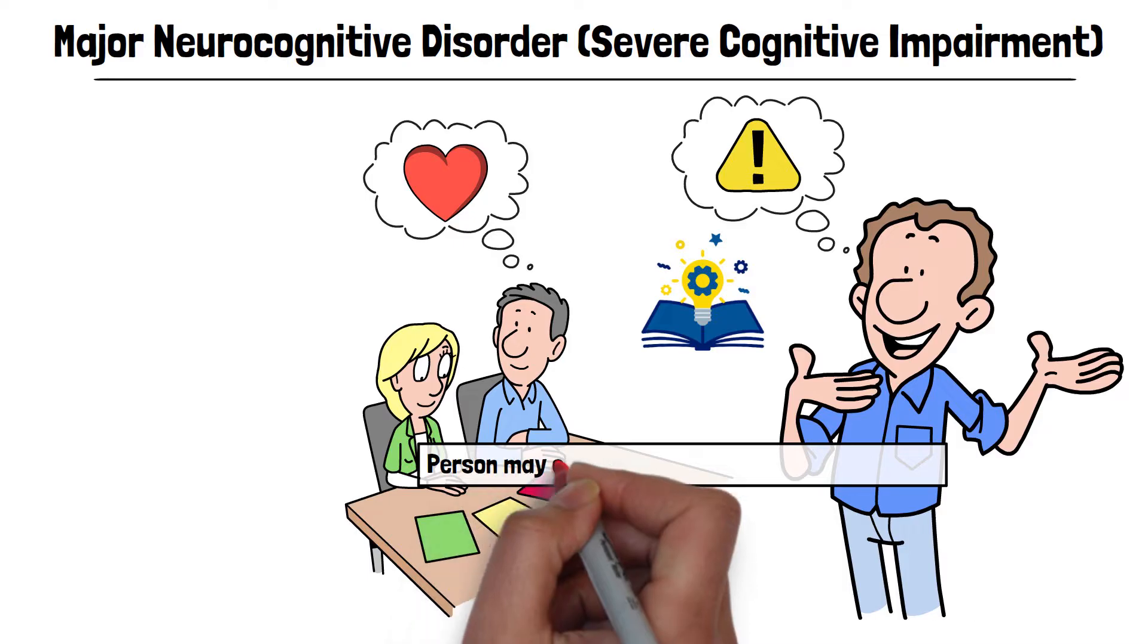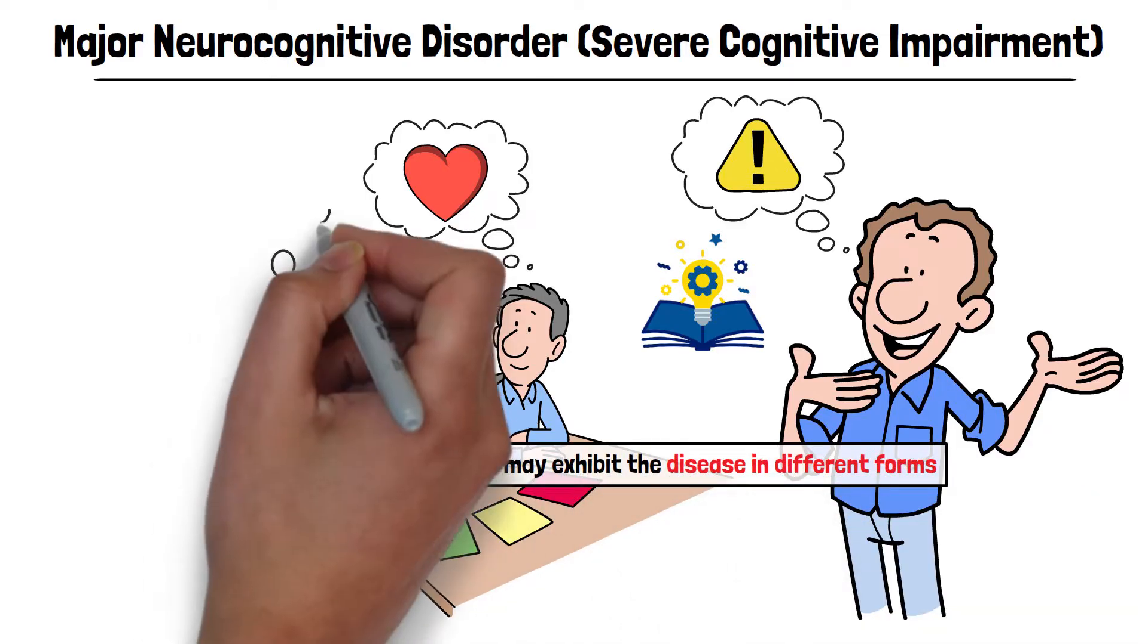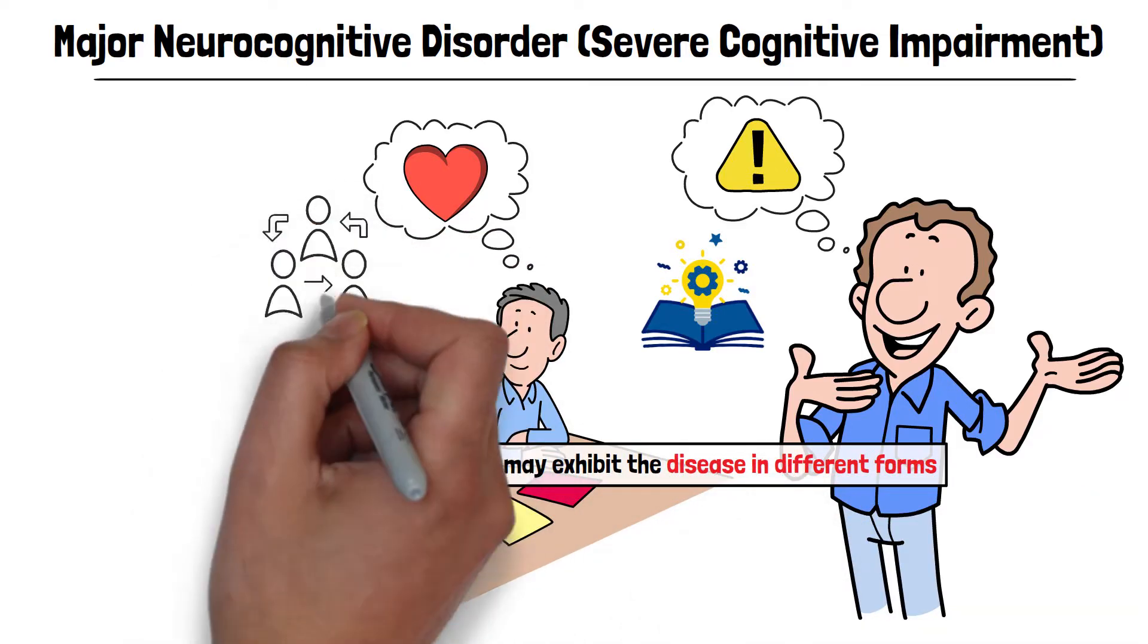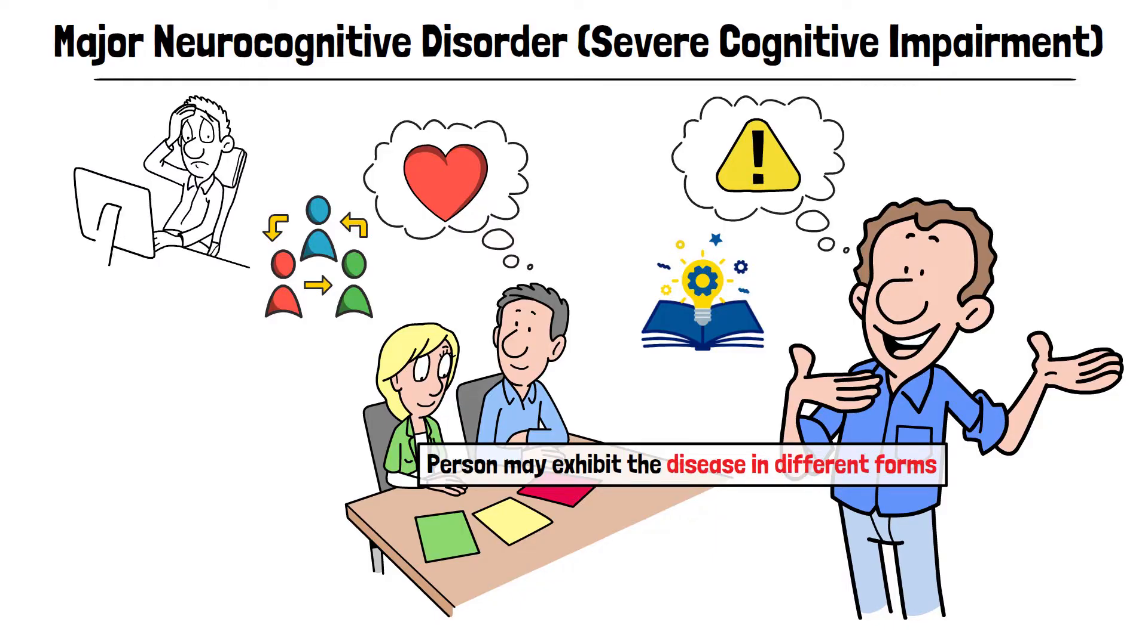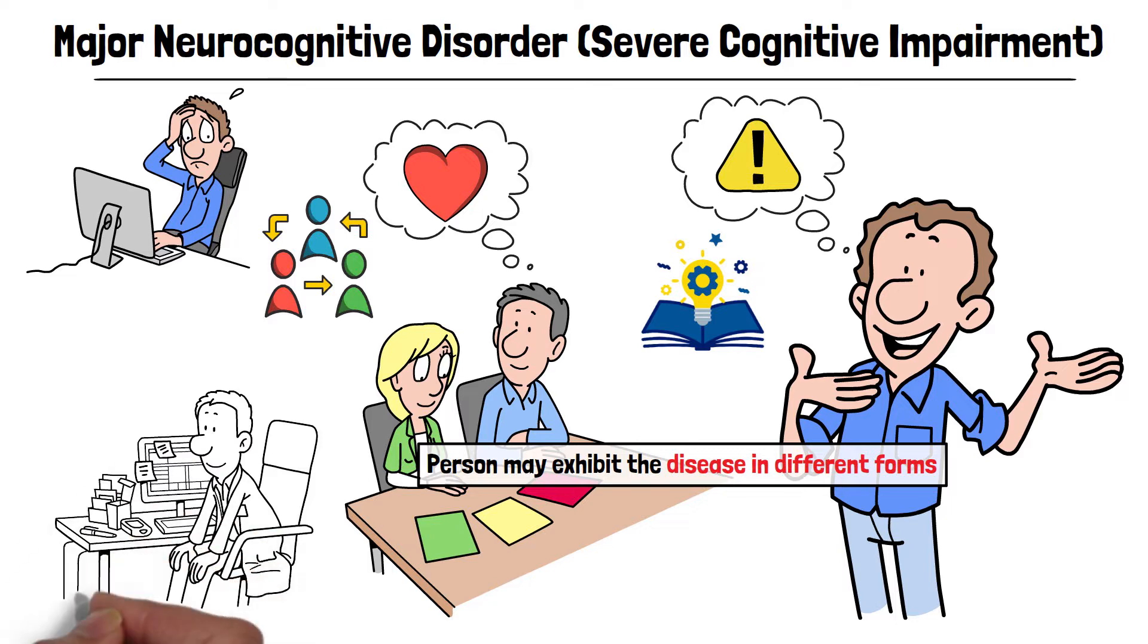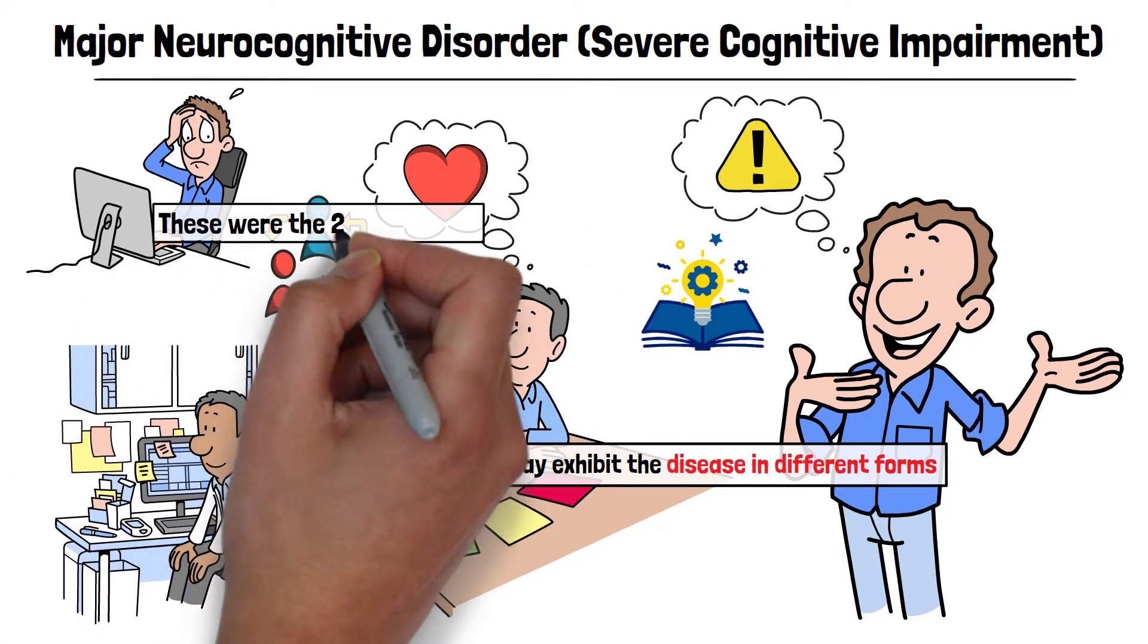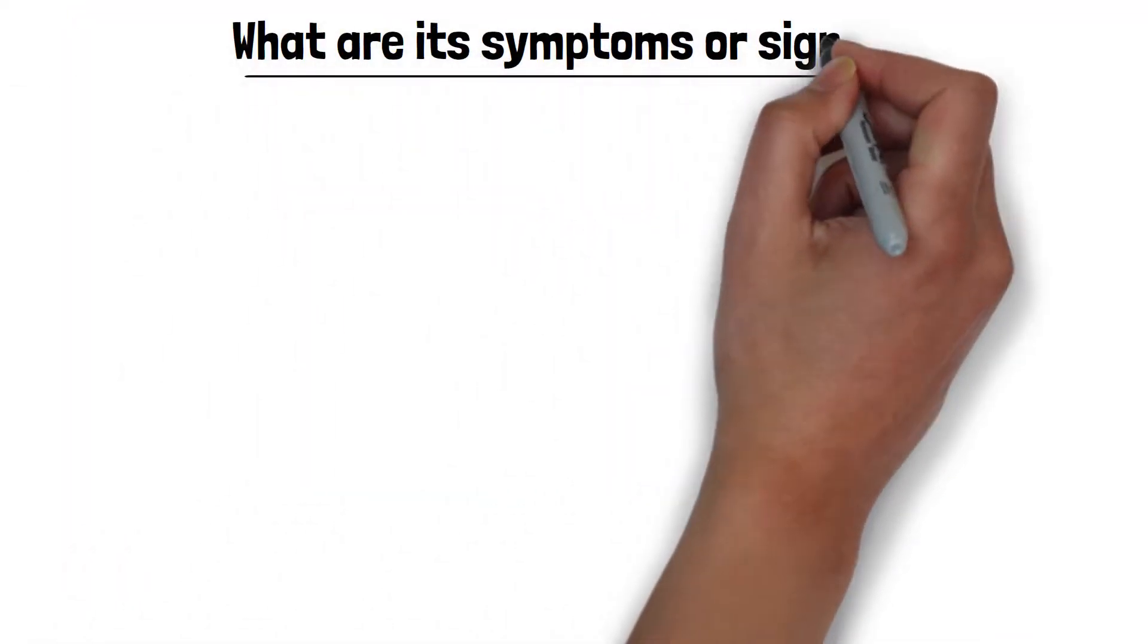Each person may exhibit the disease in different forms, and its effect also varies from one individual to another. Therefore, if you or someone you know is experiencing such difficulties, it is very important to consult a doctor or mental health specialist. These were the two main points. Now let's move forward and look at what are its symptoms or signs.